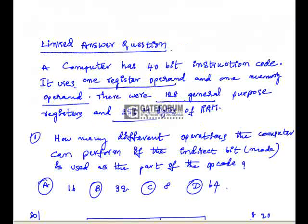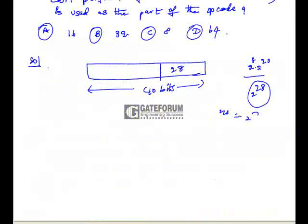If 128 general purpose registers are there, we need 128, which is 2^7. So 7-bits are required. 28 plus 7 will be 35.